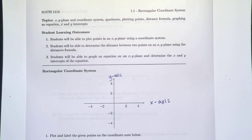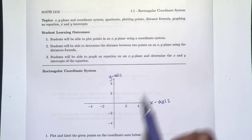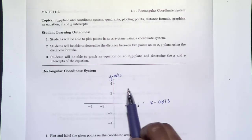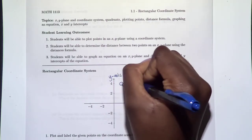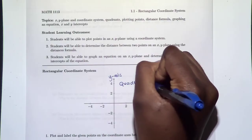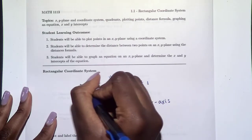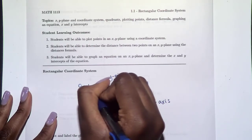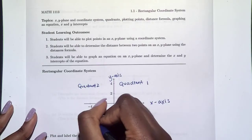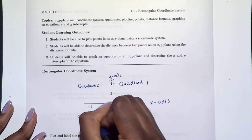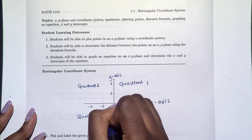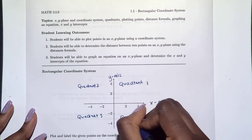One axis is vertical and one is horizontal, and that creates four different spaces called quadrants. The way we number the quadrants is counterclockwise. This is quadrant one, then quadrant two, quadrant three, and quadrant four.